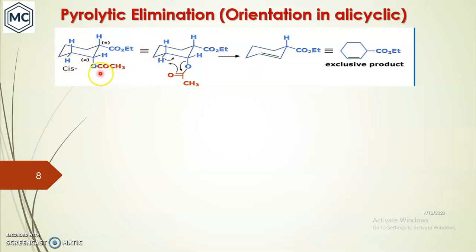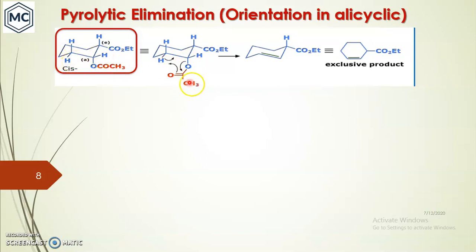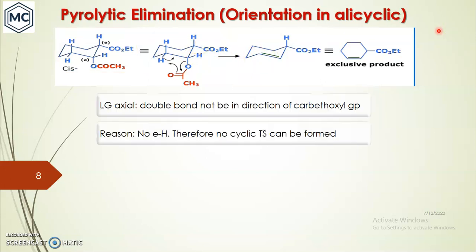Next is pyrolytic elimination in an alicyclic system. In this example, the leaving group is at the axial position. It undergoes syn elimination with the equatorial hydrogen in a concerted mechanism, so the double bond will be formed at that position. If the leaving group is axial and there is no equatorial hydrogen, no cyclic transition state can be formed.